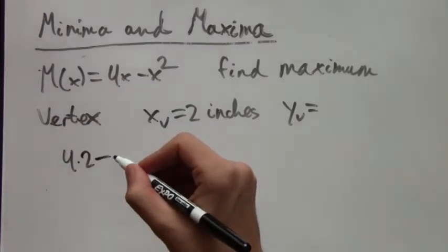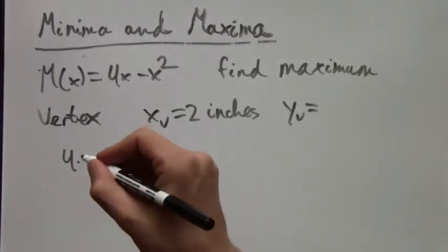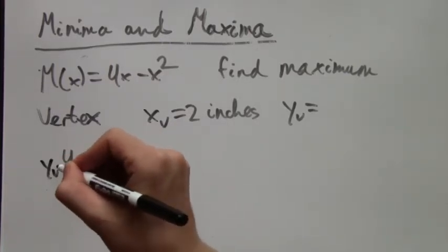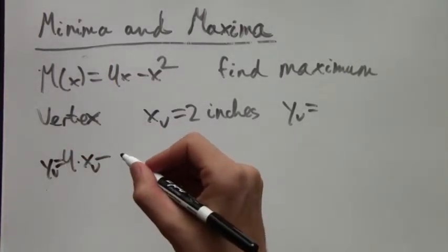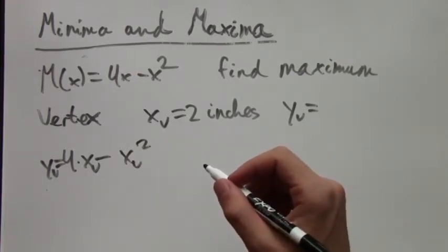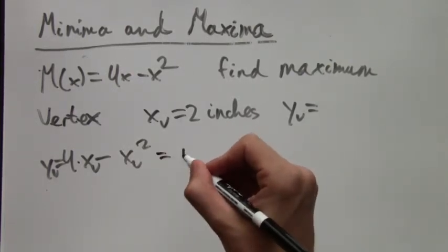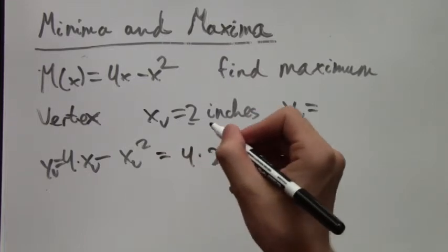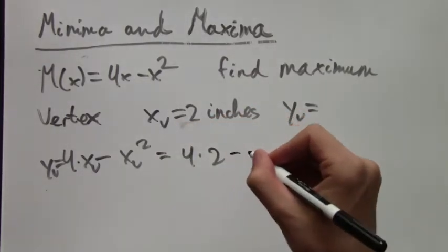To do that, we will just have to plug into our formula. And our formula is y or M(x) equals 4x minus x squared. To find the y-coordinate of the vertex, we just plug in the x-coordinate of the vertex. So we get 4 times 2 minus 2 squared, which equals...